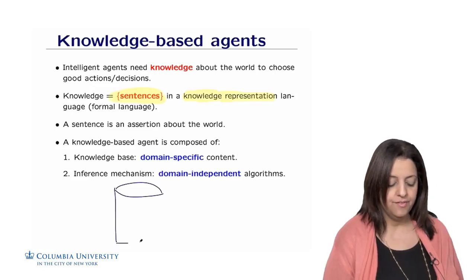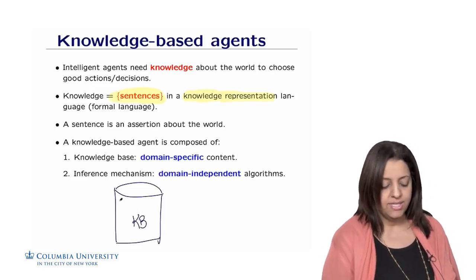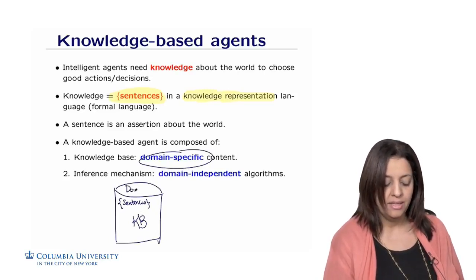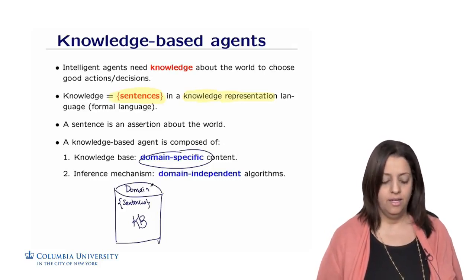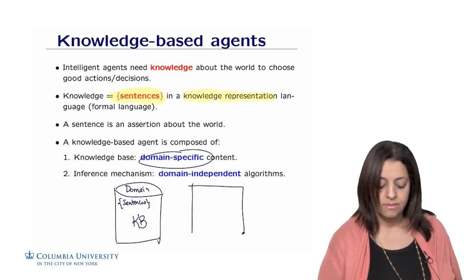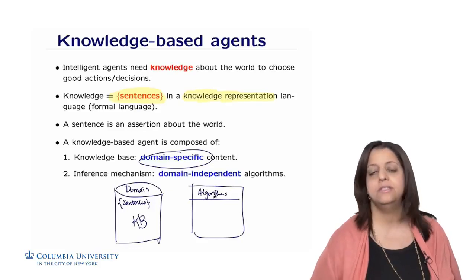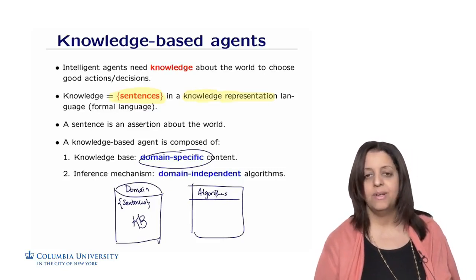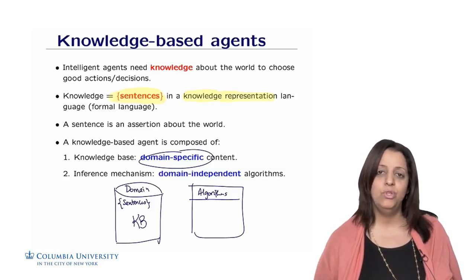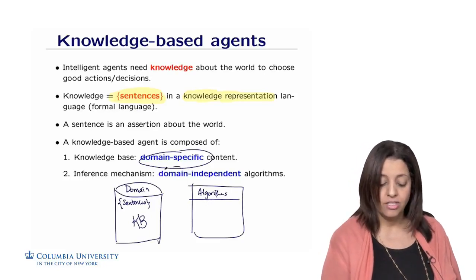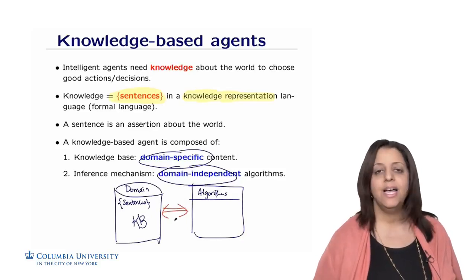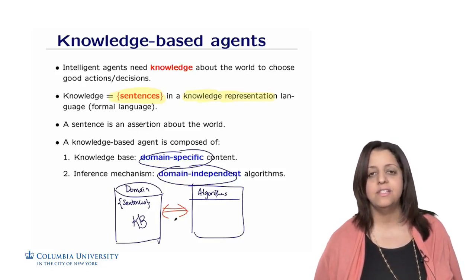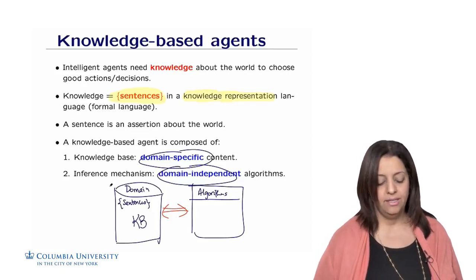The knowledge base is represented by a set of sentences in some formal representation or language, and it is completely domain-specific — the relevant sentences depend on the domain. We also have a set of algorithms that help us make inference, and these are completely independent of the domain. These domain-independent algorithms — search, CSP, or inference algorithms — help derive new sentences from existing ones. As the agent evolves in the environment, inference can produce new sentences that are added back to the knowledge base.